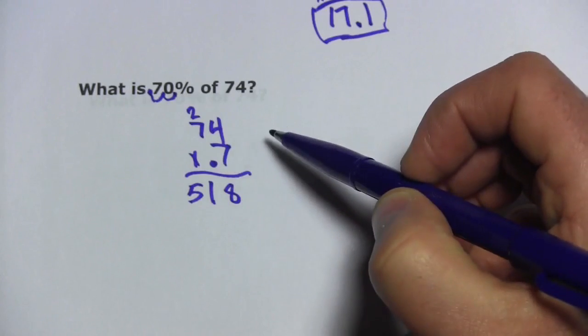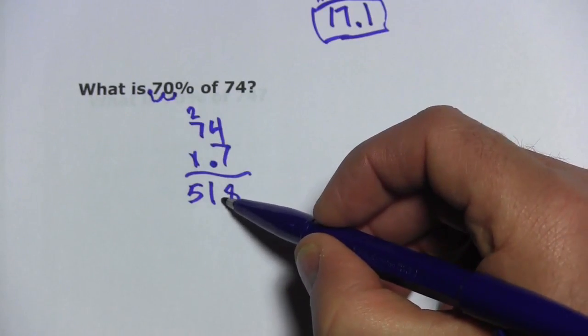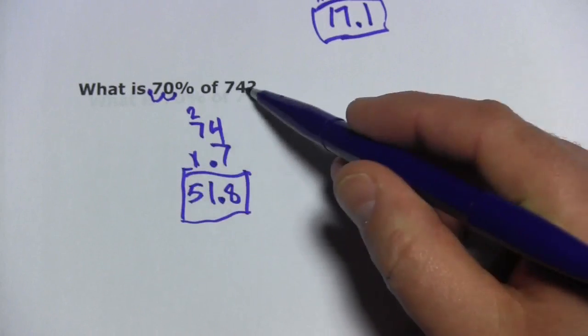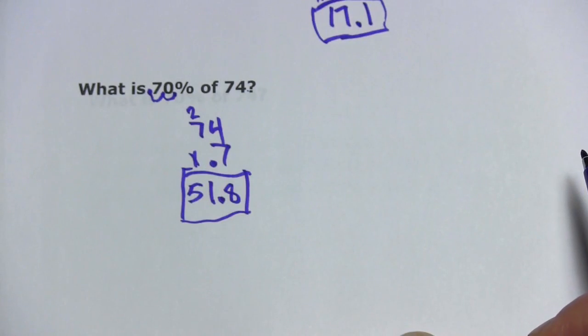And then I've got one digit behind the decimal place here. So, I put one digit behind the decimal place in my answer. And 70% of 74 is 51.8. So, that's a little bit of work with finding percentages of numbers.